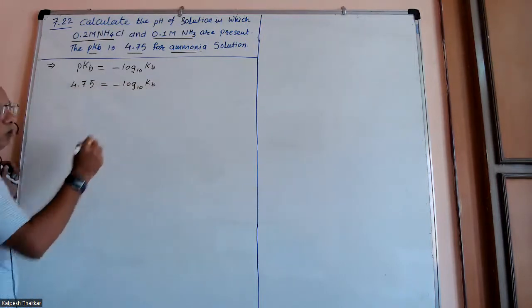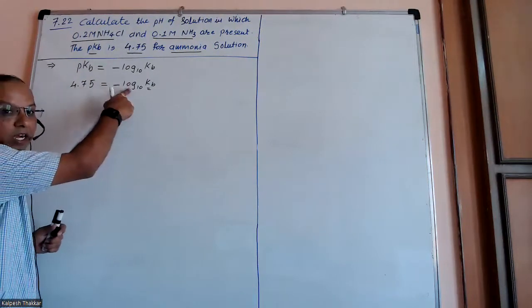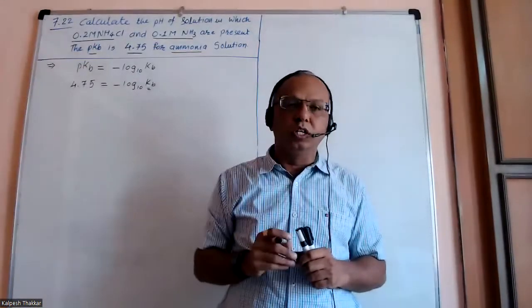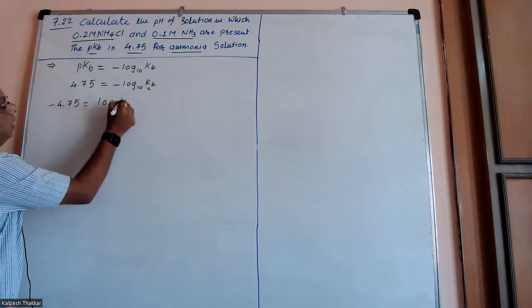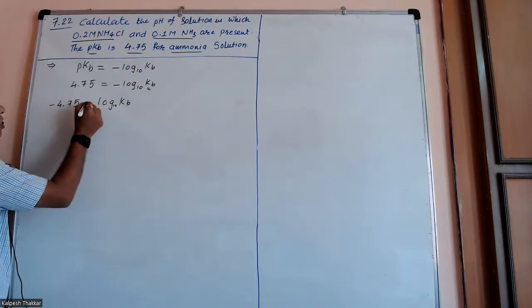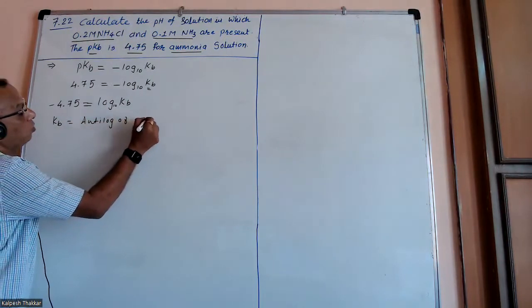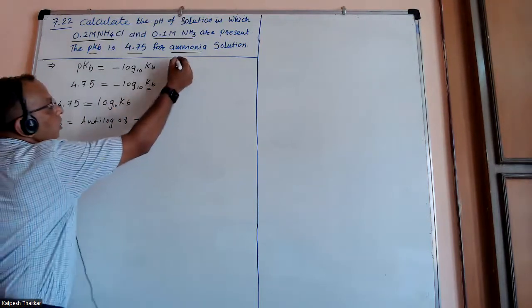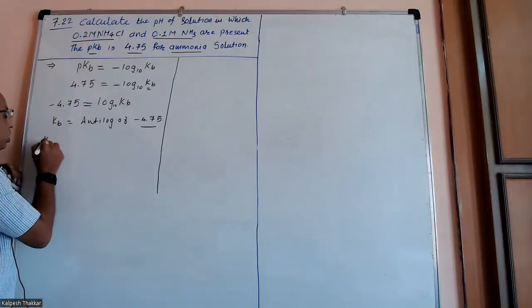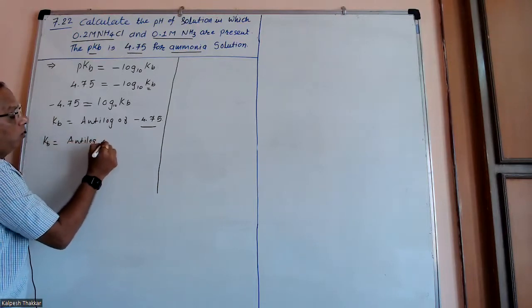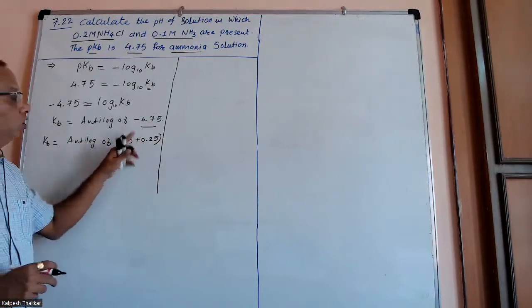I want to find KB, so I need to remove the minus sign and the log. To remove the log, we use the anti-log. But first, the minus sign is there, so if I multiply both sides by minus, I get minus 4.75 equals log KB. Now KB equals anti-log of minus 4.75. The anti-log of a negative number is not directly possible, so we split minus 4.75 into minus 5 plus 0.25.